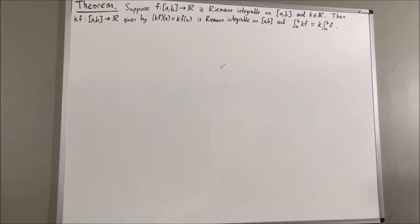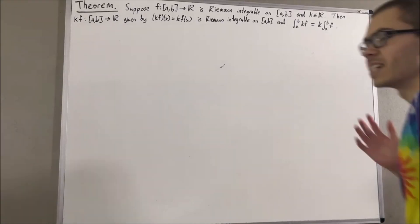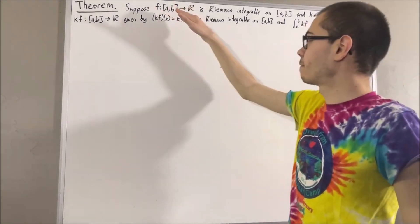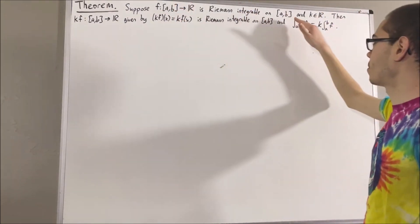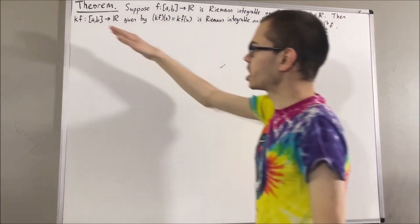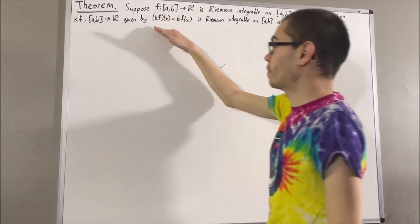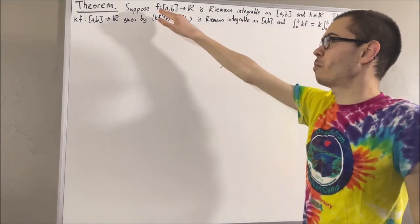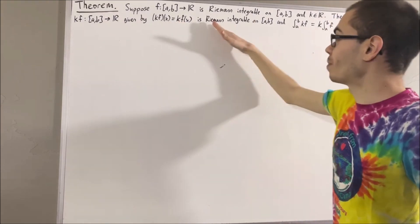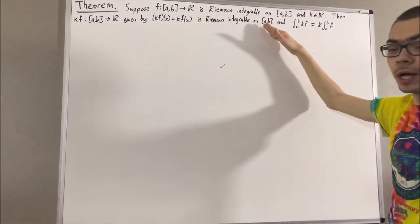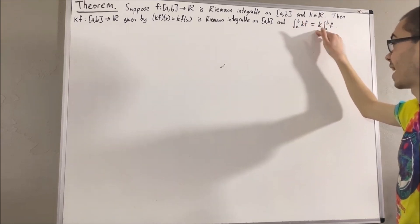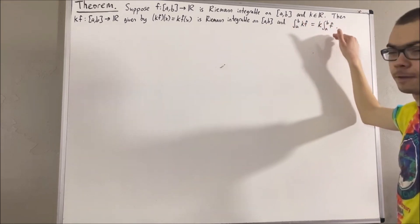Hello! In this video, we are going to prove the following theorem. Suppose f is Riemann integrable on [a, b], and k is a real number. Then the function kf, which is given by multiplying all the output values of f by the constant k, is Riemann integrable on [a, b] as well, and the integral from a to b of kf is equal to k times the integral from a to b of f.